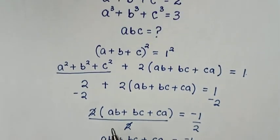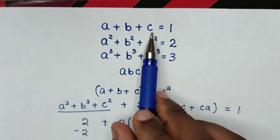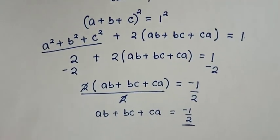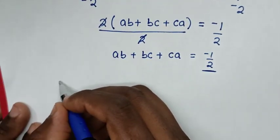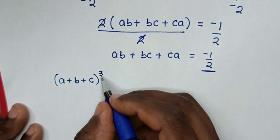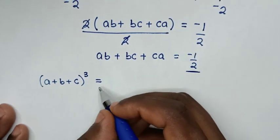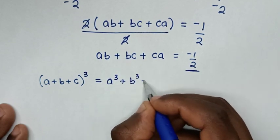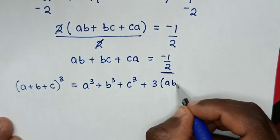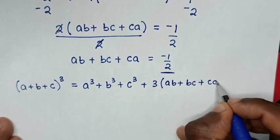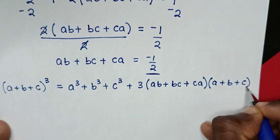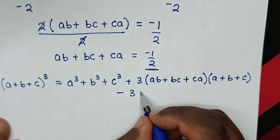In the second step, we find the cube of a plus b plus c. From the rule, (a plus b plus c) cubed equals a cubed plus b cubed plus c cubed, plus 3(ab plus bc plus ca)(a plus b plus c), minus 3abc.